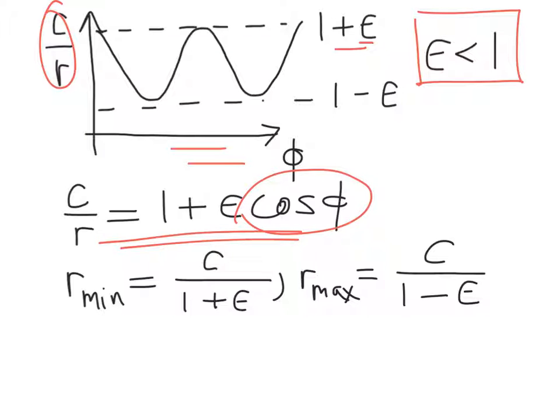And then when phi is pi, cosine of phi will be negative 1. And then c over r goes to a minimum 1 minus epsilon. And so basically, c over r oscillates back and forth like this for epsilon less than 1.